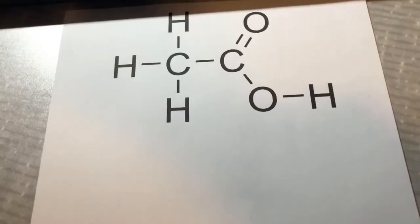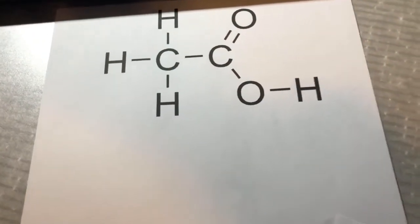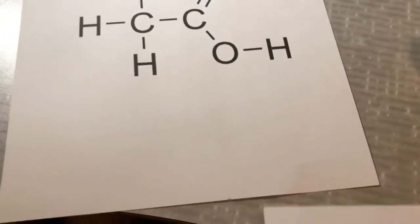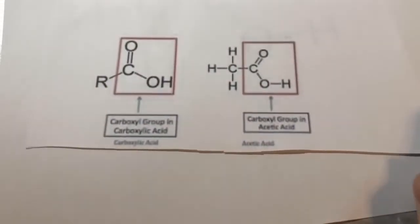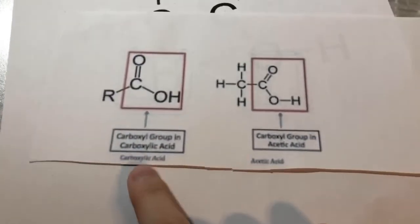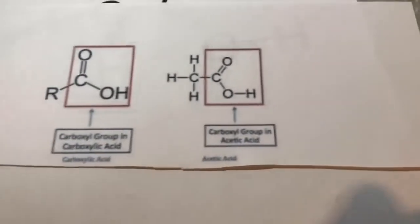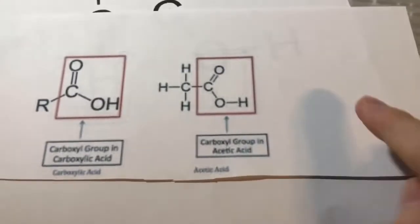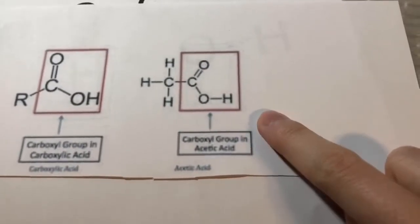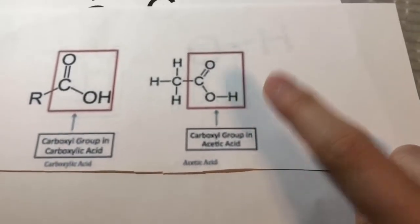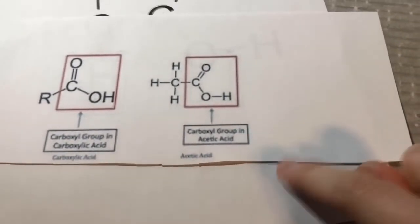Carboxylic acid is one of the functional groups for vinegar. The structural formula for vinegar shows the carboxyl group in the carboxylic acid, and over here we have the carboxyl group for acetic acid.